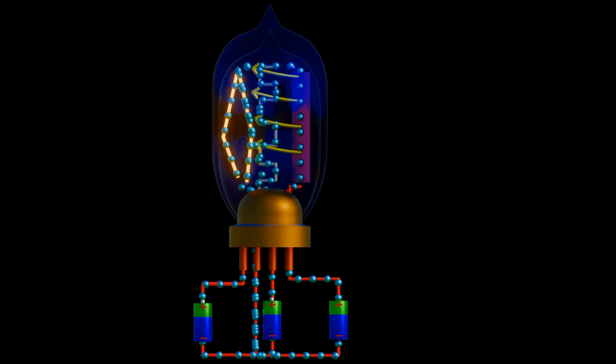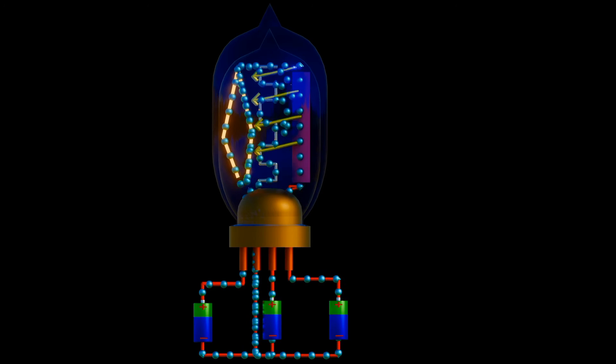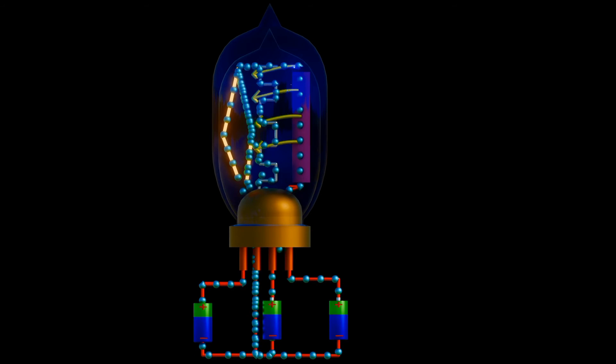when the grid is sufficiently positive at zero volts or even slightly positive with respect to the cathode, then there is no restriction on the flow of current due to the grid. This condition is called saturation.